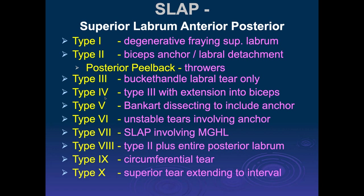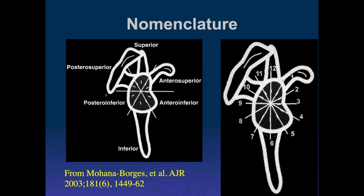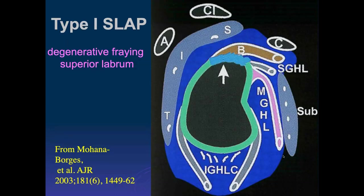Let's look at the nomenclature for tear locations. Some people call them superior, anterior superior, posterior superior, posterior inferior, anterior inferior, and inferior. Others prefer the clock-face position, though the issue with that is that what looks like the top is defined by the biceps anchor at the supraglenoid tubercle, and scapular rotation means the top is often located a bit more anteriorly. Most people use the left nomenclature rather than the clock face, though either is reasonable.